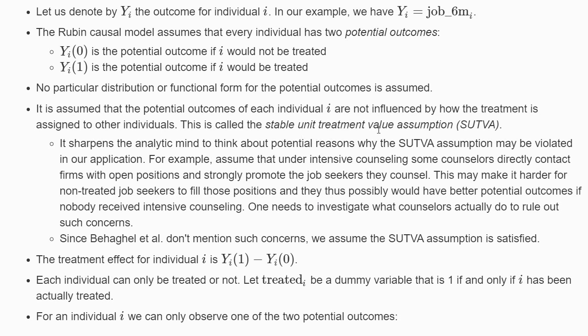Every model has assumptions, and a key assumption of the Rubin Causal Model is called the Stable Unit Treatment Value Assumption — SUTVA — which sounds like an IKEA piece of furniture. It means that the potential outcomes of each individual are not influenced by how treatment is assigned to other individuals. It helps to think about reasons why this assumption might be violated in a given application.